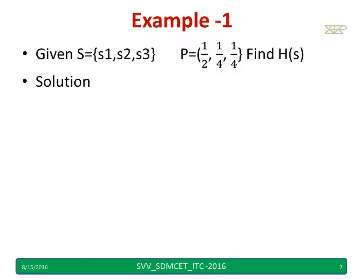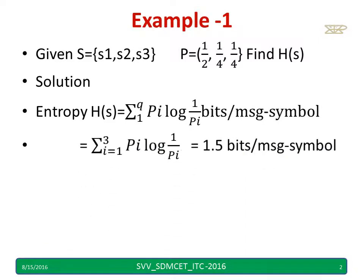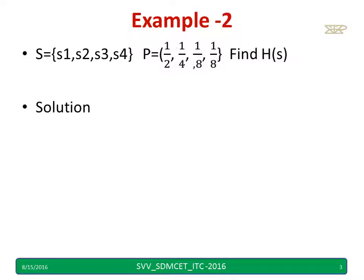Take this example: three symbols s1, s2, s3 with probabilities 1/2, 1/4, 1/4. Now using the entropy equation H = sum of pi * log(1/pi), if I find the entropy I get 1.5 bits.